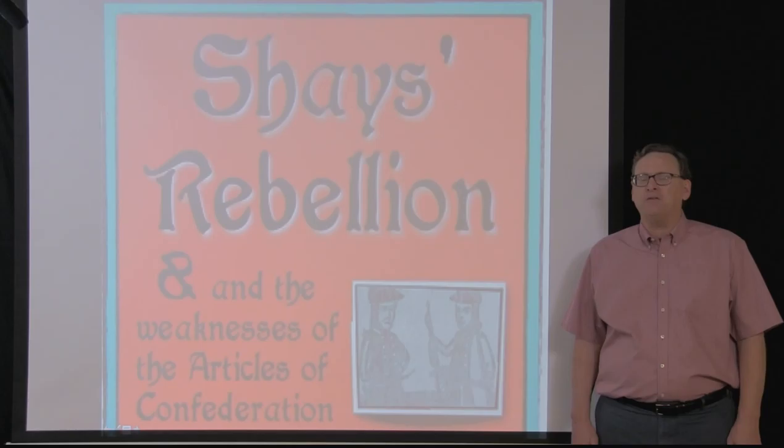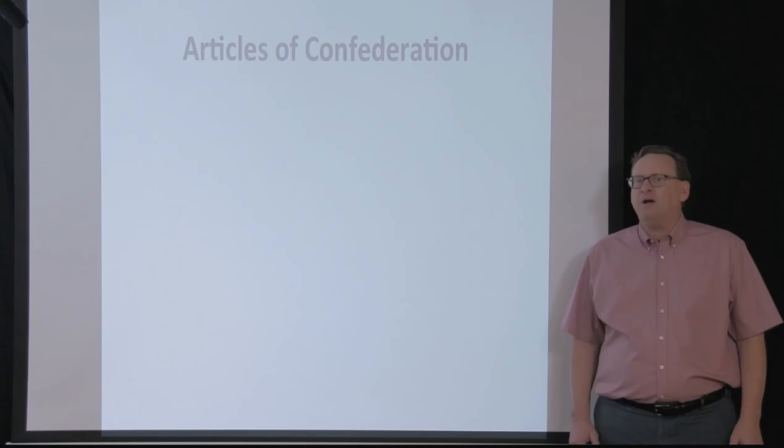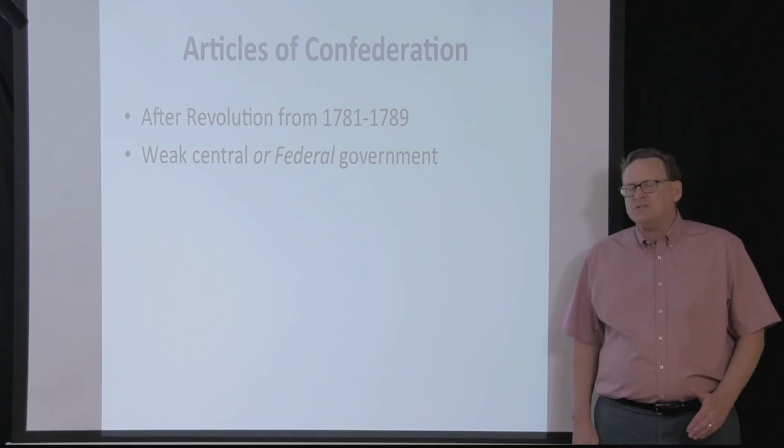Today's lesson is on Shays' Rebellion and the weaknesses of the Articles of Confederation. This involves the period directly after the Revolution, when we were a new country governed by the Articles of Confederation, which had some weaknesses.